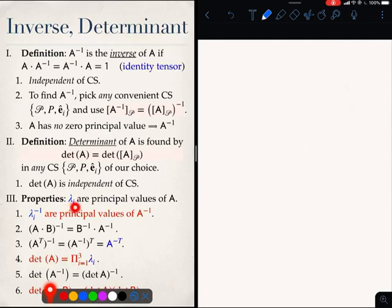The first is that if I have a tensor A and it has principal values lambda i, then lambda i inverse are the principal values of A inverse. Second thing is that if I want to compute a determinant of A, then the determinant of A is simply the multiplication of all the principal values of A.